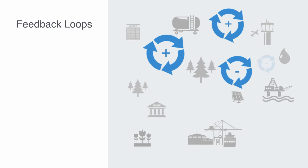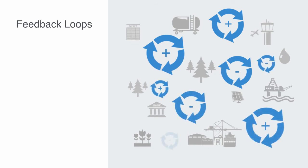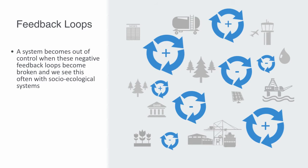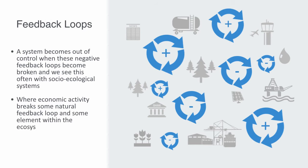Complex systems such as socio-ecological systems are regulated by distributed feedback loops. For a system to be under regulation means that it has negative feedback counterbalancing the different forces. A system becomes out of control when these negative feedback loops become broken. We see this often with socio-ecological systems where humans can gain economic value from the natural environment without the economic expenditure to balance it. Equally, it happens the other way around — when economic activity breaks some natural feedback loop, an element within the ecosystem is released from the natural feedback that stabilizes it, such as with invasive species, leading to a destabilization of the ecosystem.